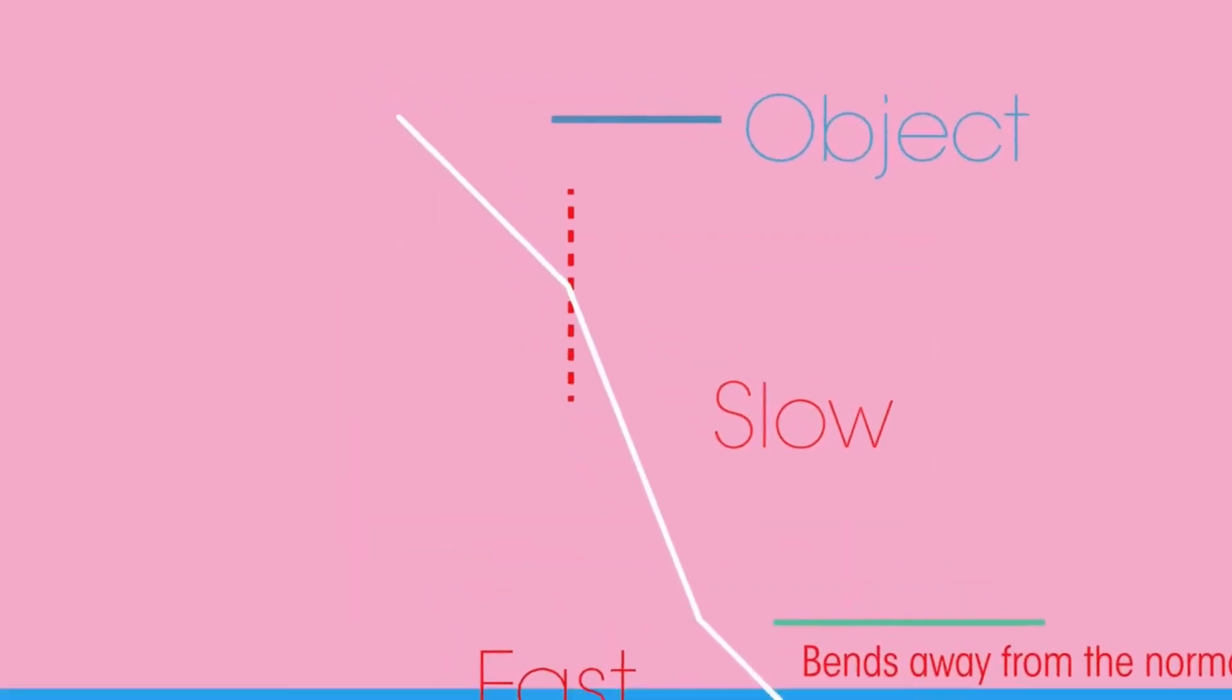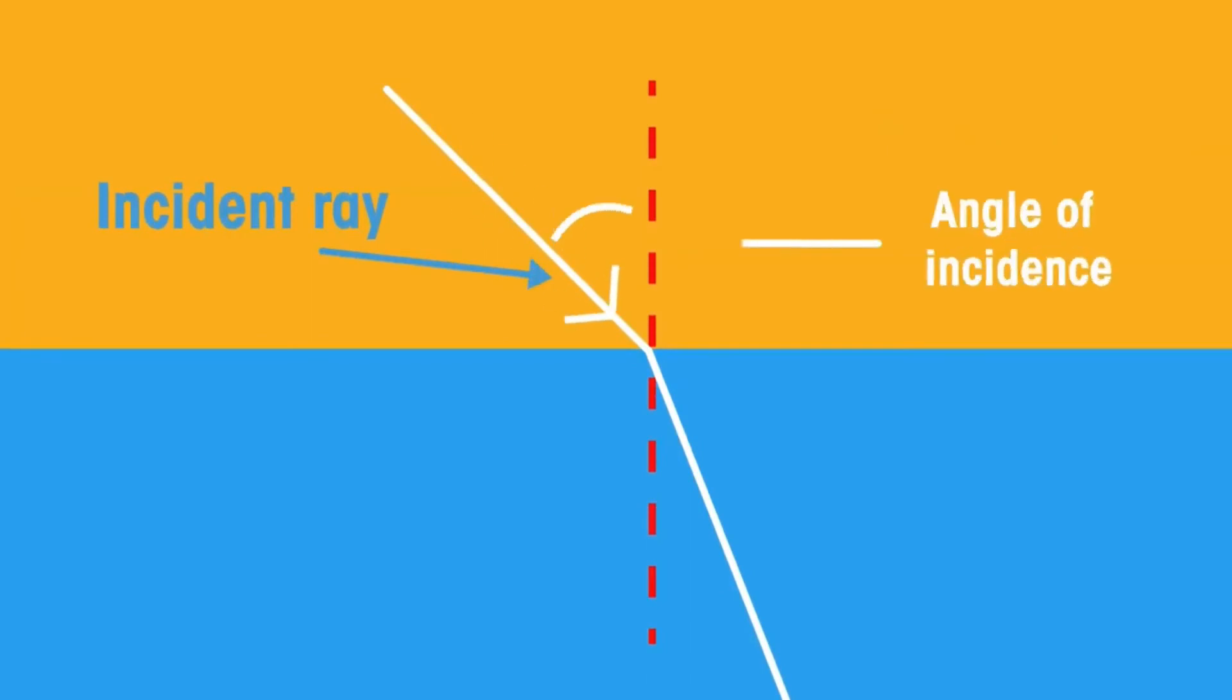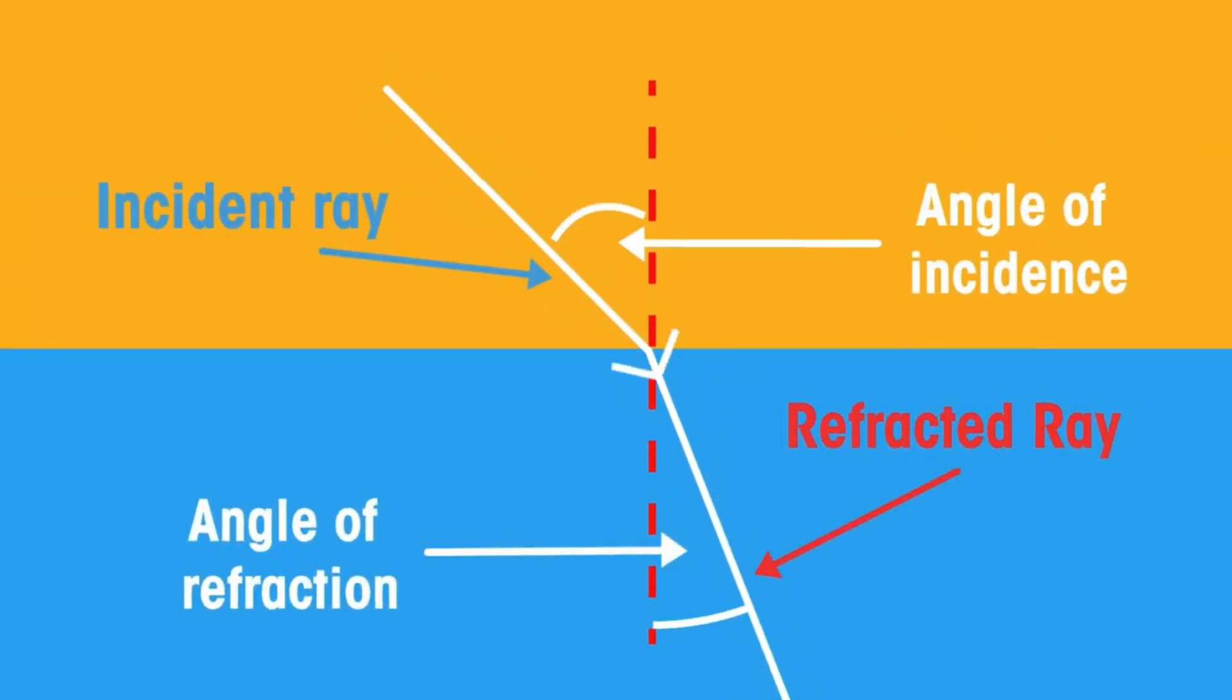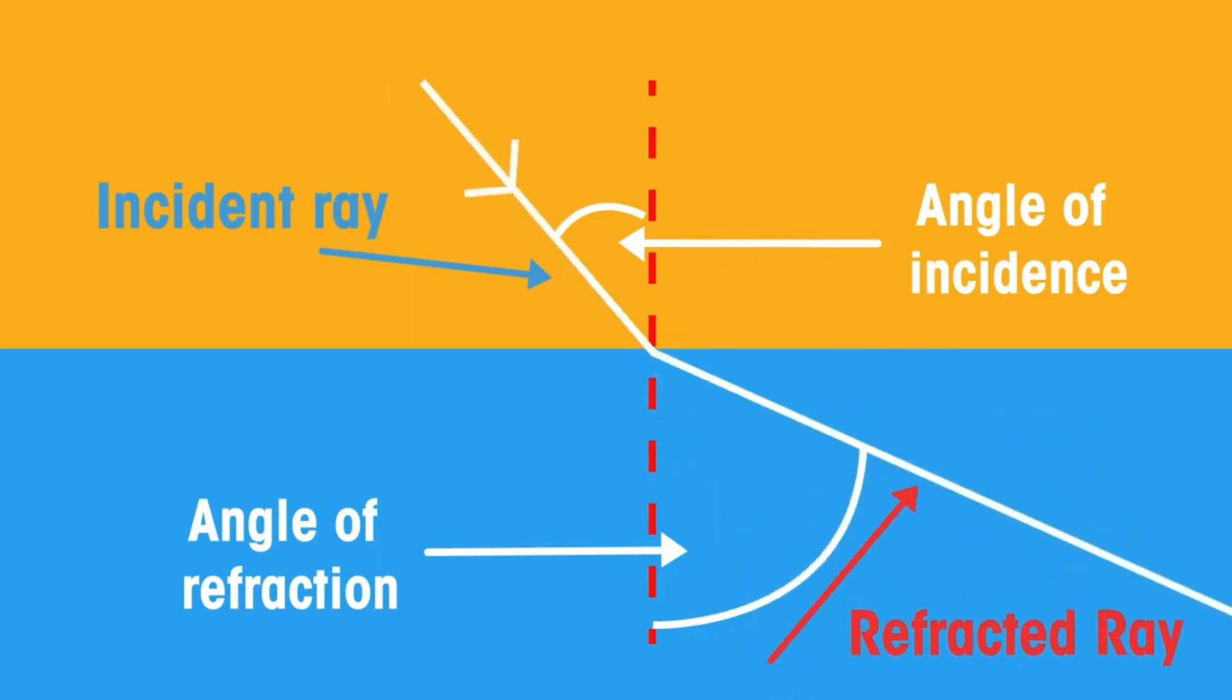Just like with reflection, refraction also has an angle of incidence and then has an angle of refraction. In refraction the two angles do not equal one another because they are travelling through different medium. The greater the change in speed, the greater the angle of refraction.